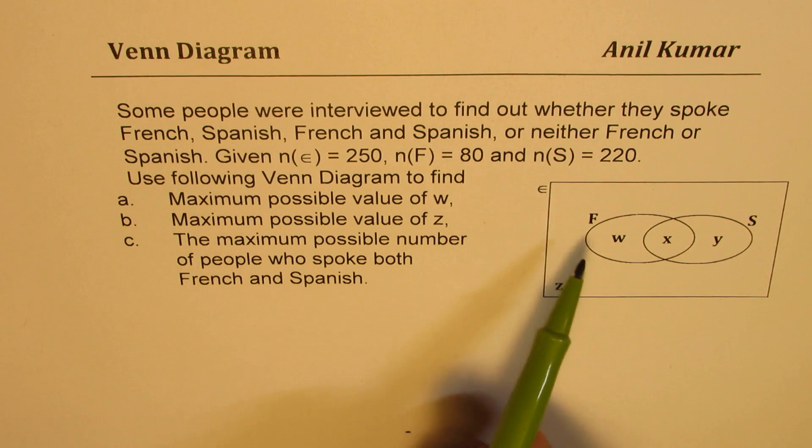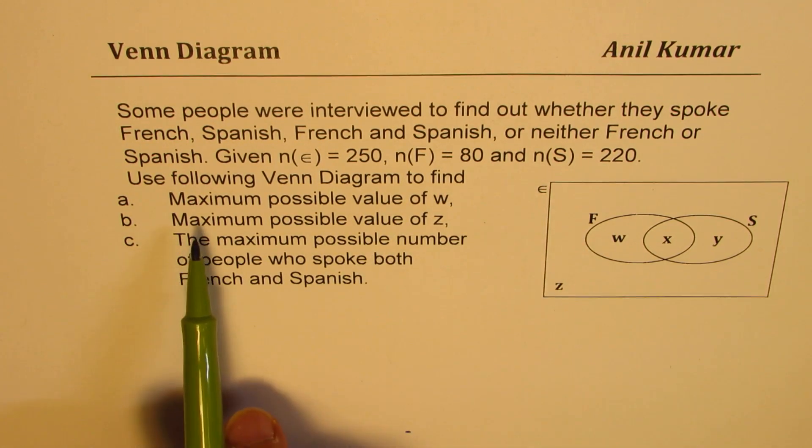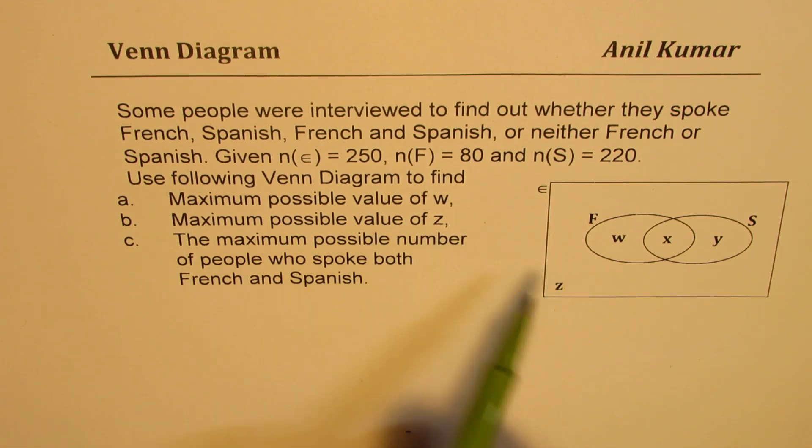Use the following Venn diagram to find: maximum possible value of W, maximum possible value of Z, maximum possible number of people who spoke both French and Spanish. That means X.